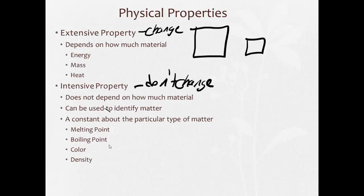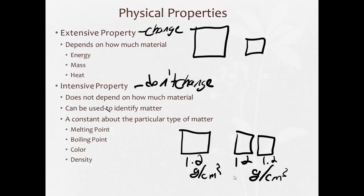Things like color, density. Density is very useful in identifying something, right? Let's say we have a block here, and the density is 1.2 grams per cubic centimeter. And we cut it in half into two smaller blocks. The density of each half is going to be 1.2 grams per cubic centimeter. It does not change.